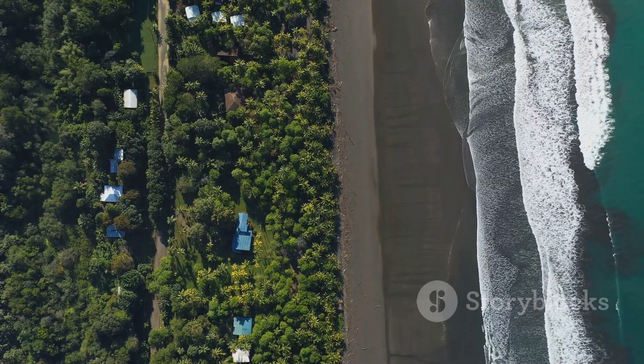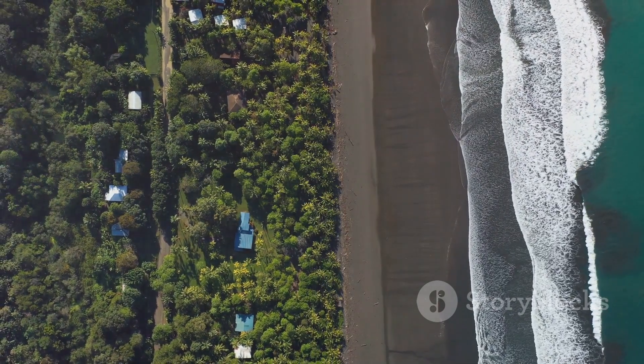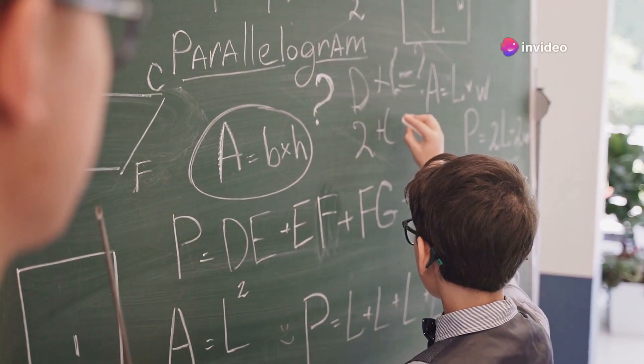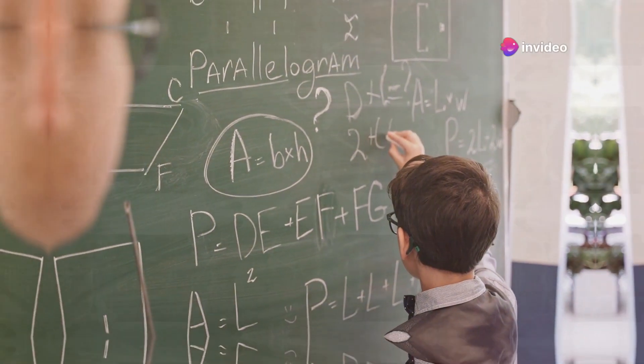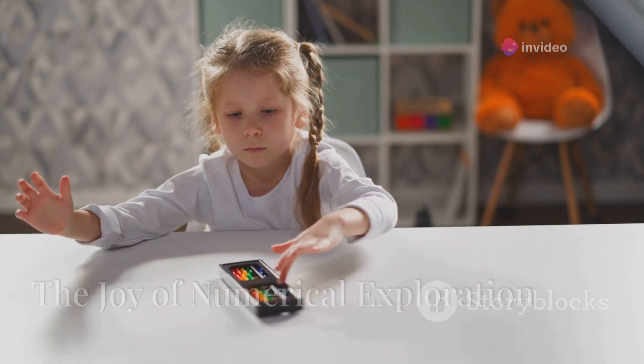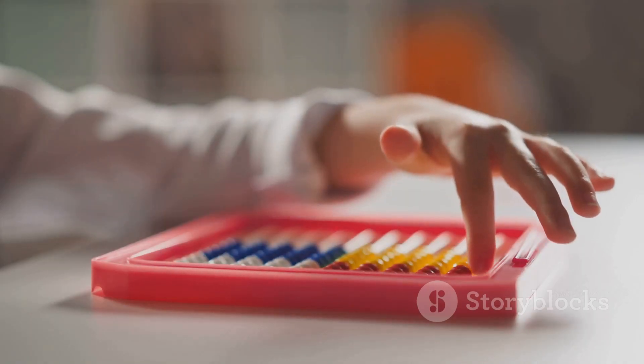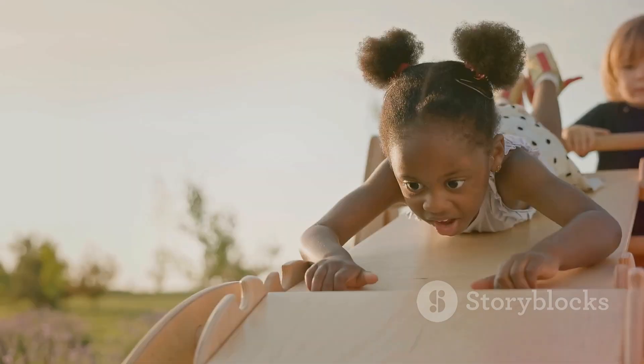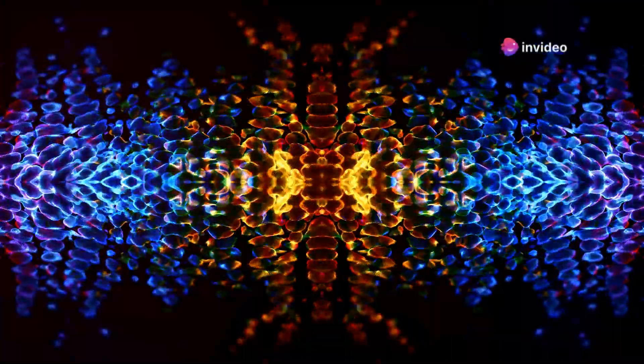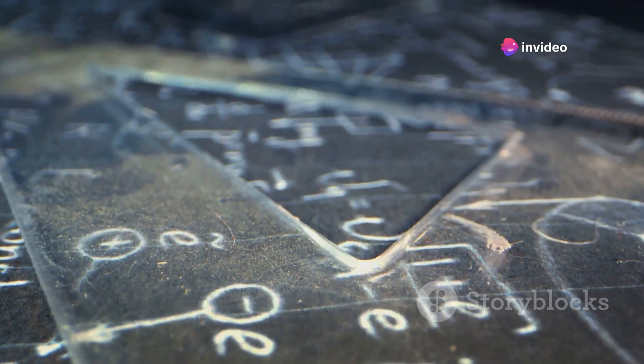Similarly, the golden ratio phi, approximately 1.618, appears in art, architecture, and nature, representing a harmonious proportion that has captivated thinkers for centuries. The exploration of numbers, whether it's 37, pi, or any other number, can be a source of immense joy and wonder.